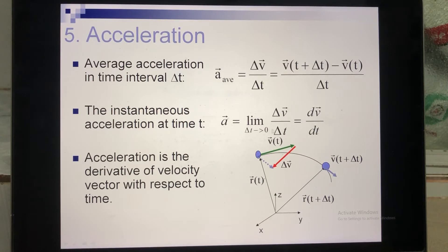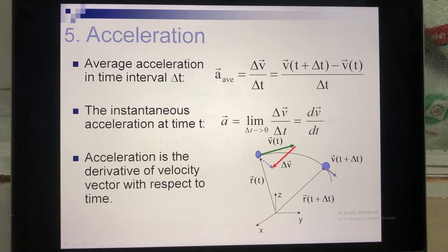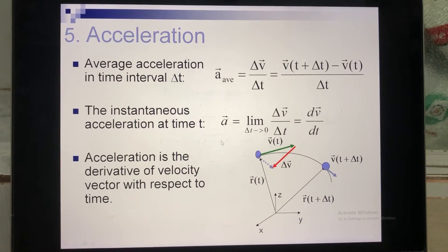Now we move to instantaneous acceleration. You do it the same way, but in this case delta T is very small compared to one second. So instead of dividing delta V by delta T, you take the derivative of V with respect to time.